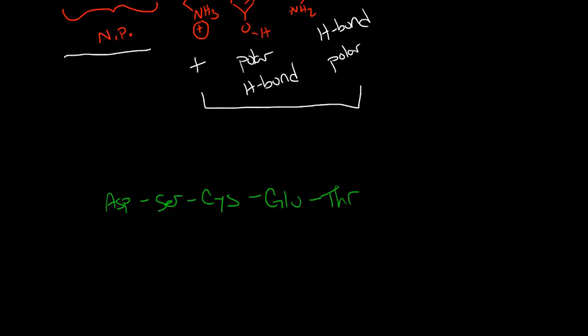Aspartic acid is CH2 and then we have a carboxylate which is a negative charge. Serine is an alcohol. Cysteine is similar to serine except it has an SH group which is called a thiol. Glutamic acid looks similar to aspartic acid except it has three carbons, so this is also a negative charge. And threonine looks similar to serine except it has the OH group coming off of this first carbon.